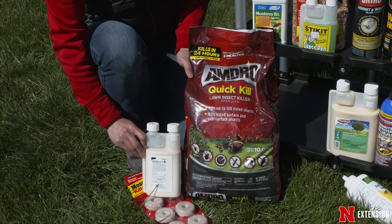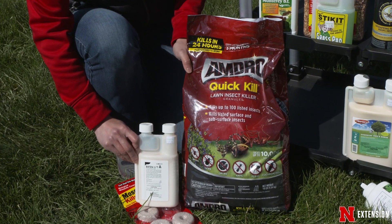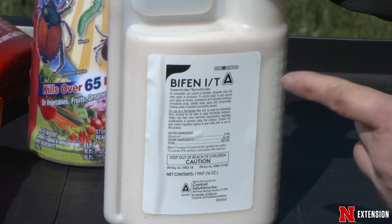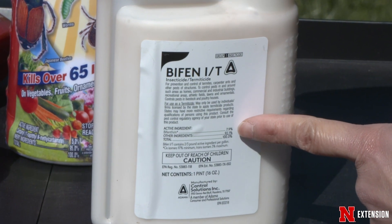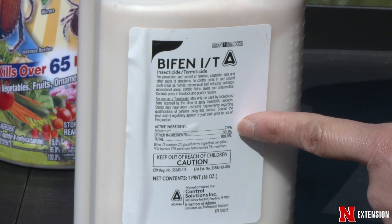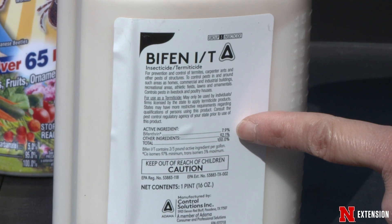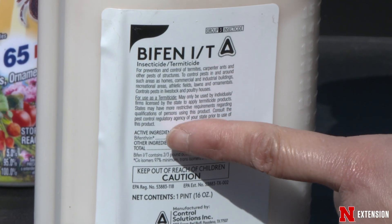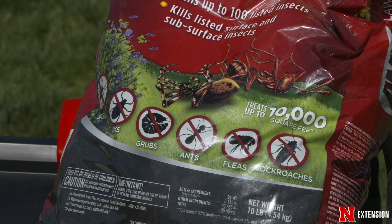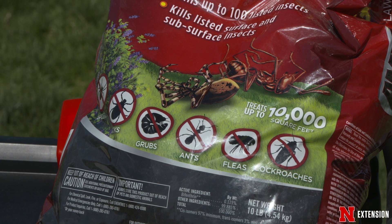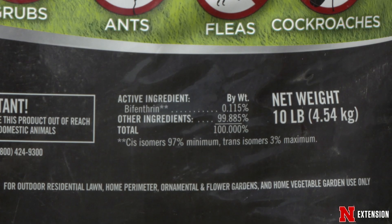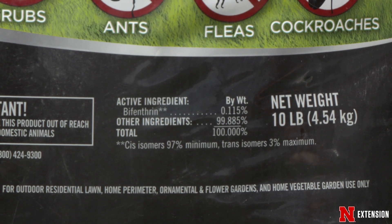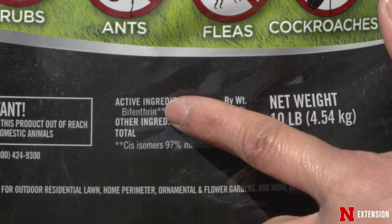Another example are the products that have the active ingredient bifenthrin. Bifenthrin can be found in many products — it can be found in a liquid concentrate, in a ready-to-use spray with a sprayer already attached, or it can be used as granulars. So knowing where you want to treat, if this is a lawn or a garden or a sprayer on your house, will determine the product and you can only find that out by reading the label.